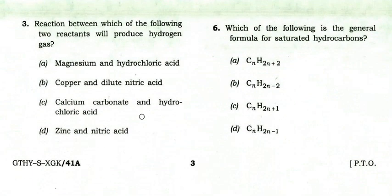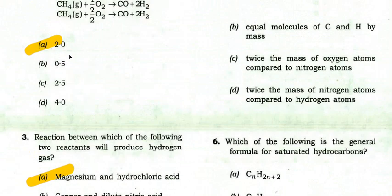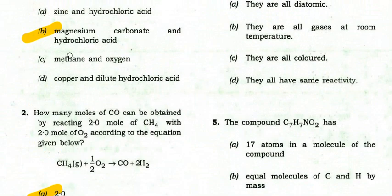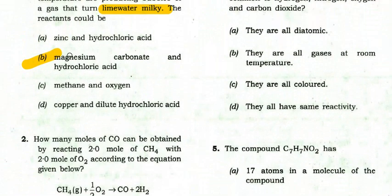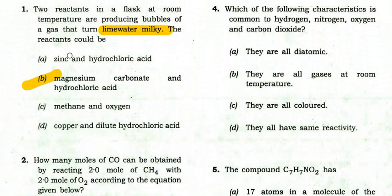Next question: reaction between which of the following two reactants will produce hydrogen gas? The right option is magnesium and hydrochloric acid.